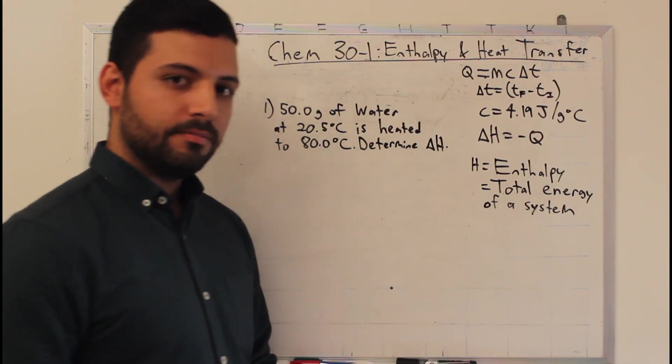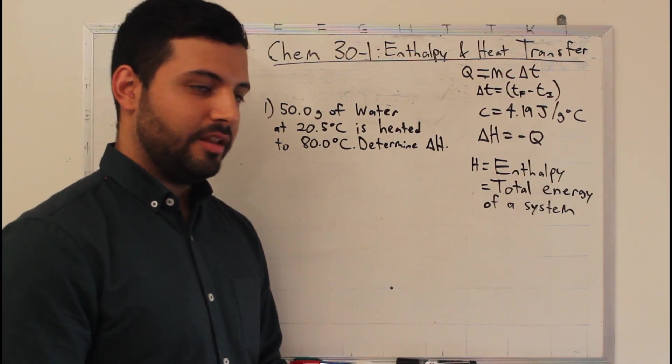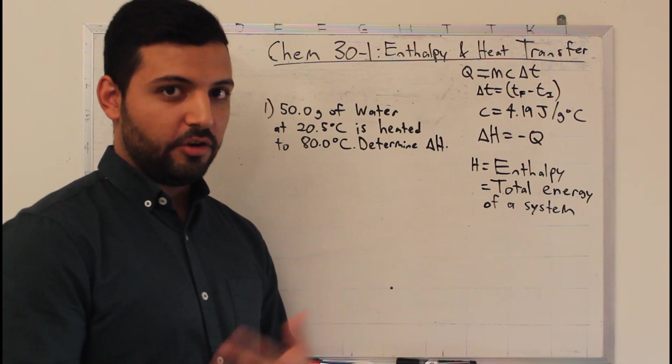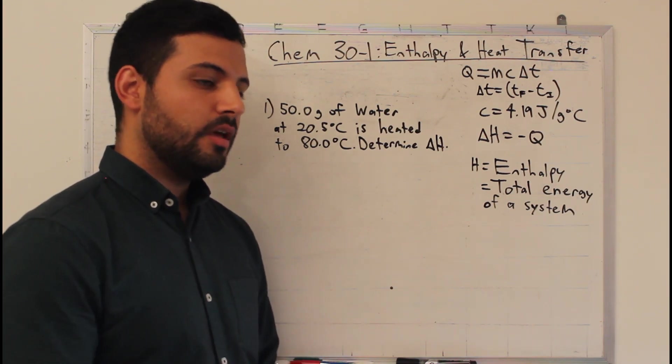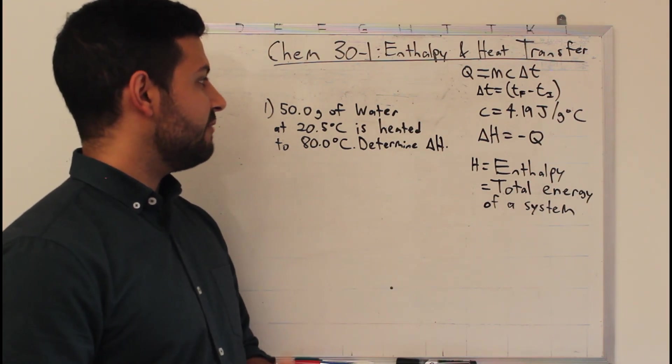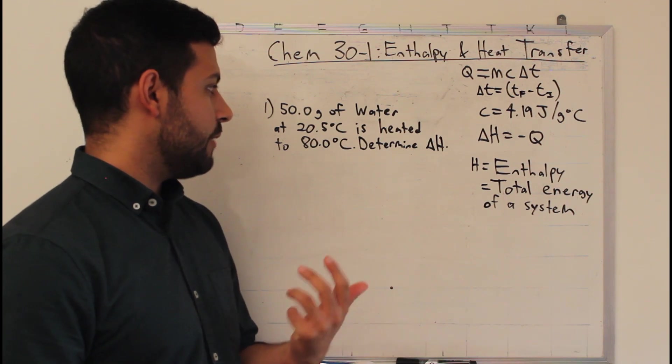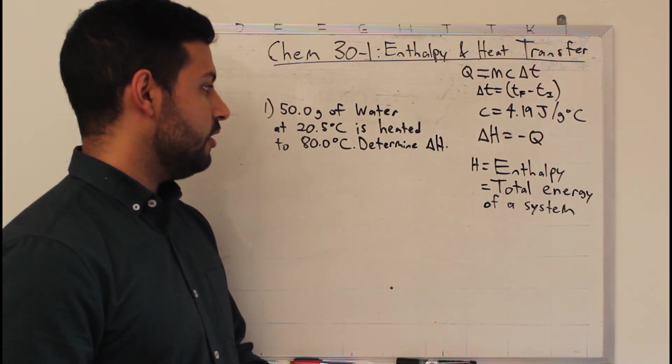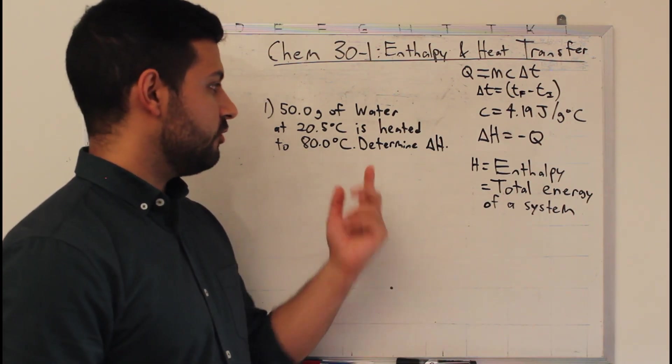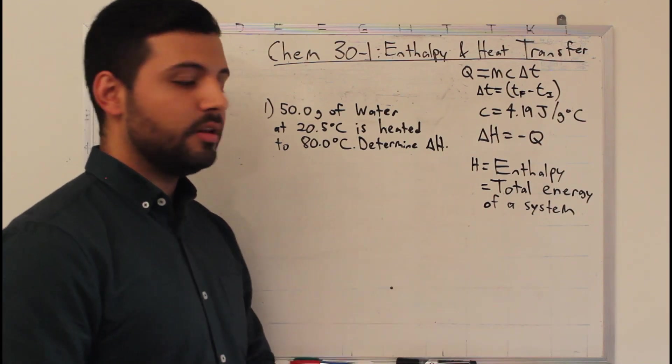If we revisit our first example, we can go through it in a bit of a different way to calculate the enthalpy, or the energy change within the system. So, for example, in our first question, we had 50 grams of water at 20.5 degrees Celsius being heated to 80 degrees Celsius. Instead of determining Q this time, we have to determine delta H.